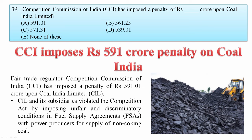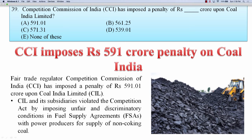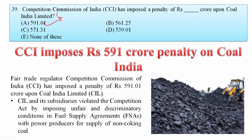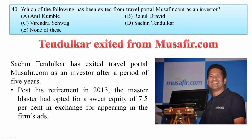The Competition Commission of India (CCI) imposed a penalty of 591 crore rupees on Coal India Limited for violation of the Competition Act by imposing unfair and discriminatory conditions in fuel supply agreements with power producers for supply of non-coking coal. Your answer is A — 591 crore.